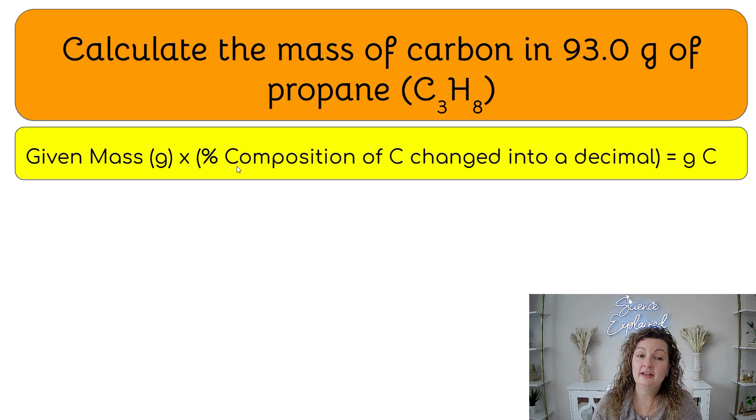And we're going to multiply that by the percent composition of carbon because it's asking for carbon, right? But we need to change it in decimal. We can't do this with a percent. So we're just going to kind of backtrack and we're going to turn it into a decimal.